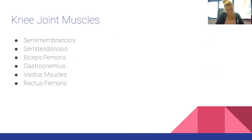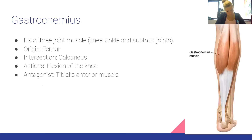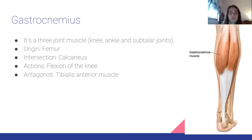Moving to knee joint muscles, the presentation covers semimembranosus, semitendinosus, biceps femoris, gastrocnemius, vastus muscles, and rectus femoris — most already covered. The gastrocnemius is a three-joint muscle helping the knee, ankle, and subtalar joints. Origin: femur. Insertion: calcaneus. Action: flexion of the knee. Antagonist: tibialis anterior.